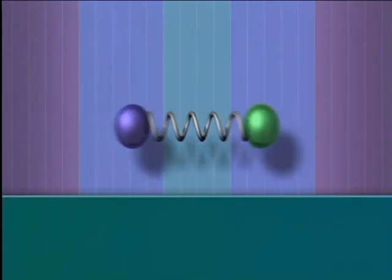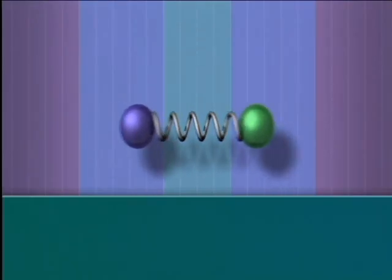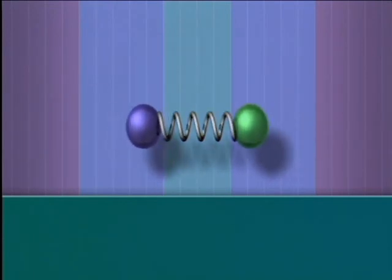A pair of atoms joined by a covalent bond can be thought of as being like balls on the end of a vibrating spring. The bond can vibrate with different amounts of energy at a frequency that depends on the masses of the atoms and the strength of the bond.